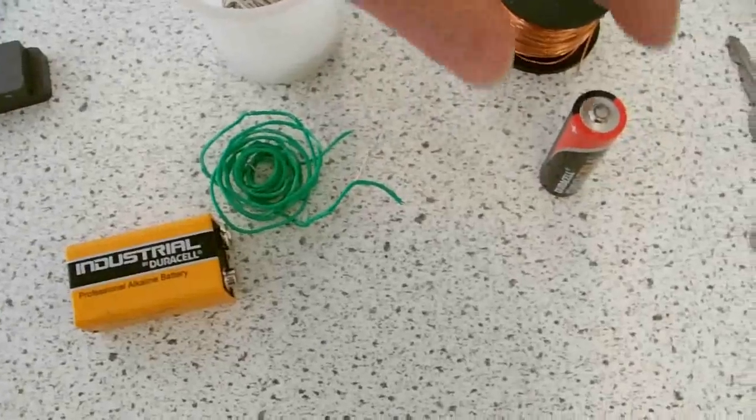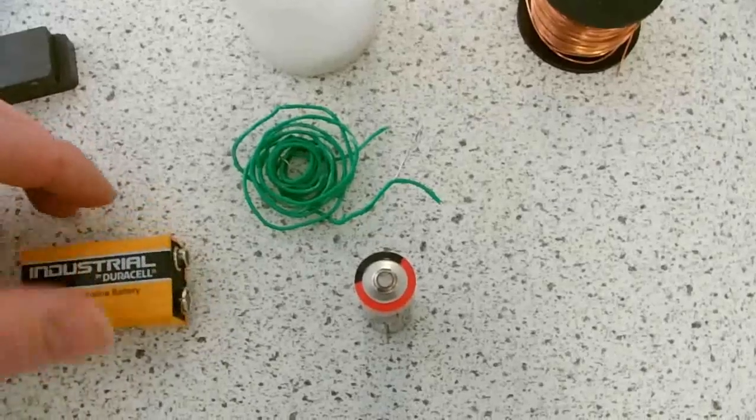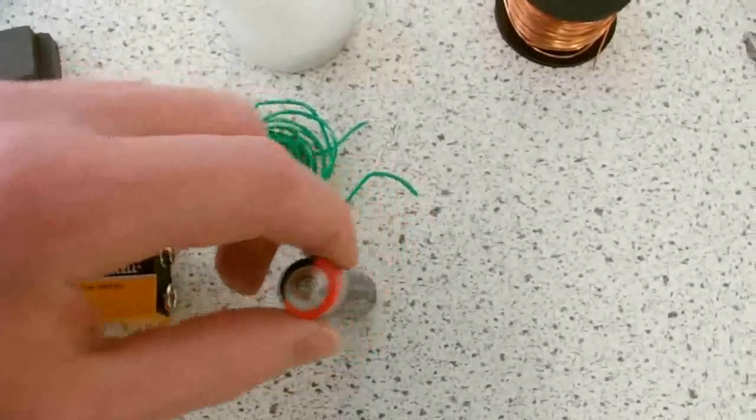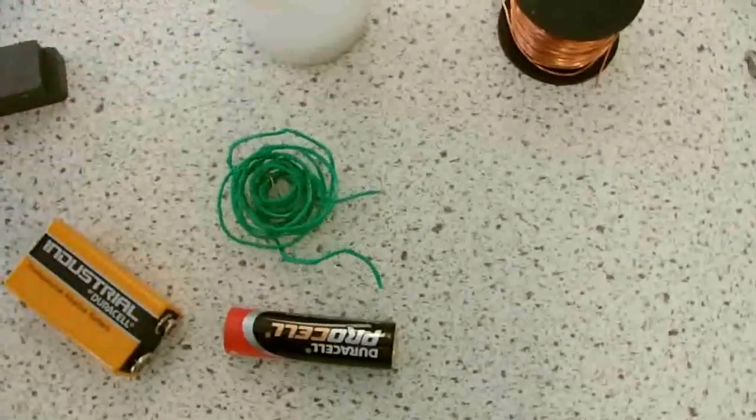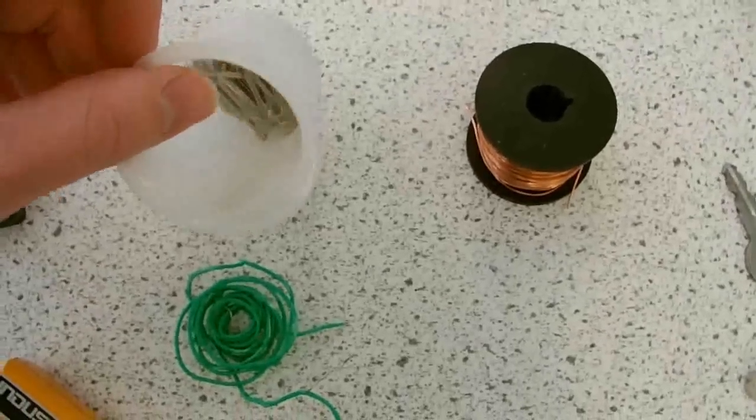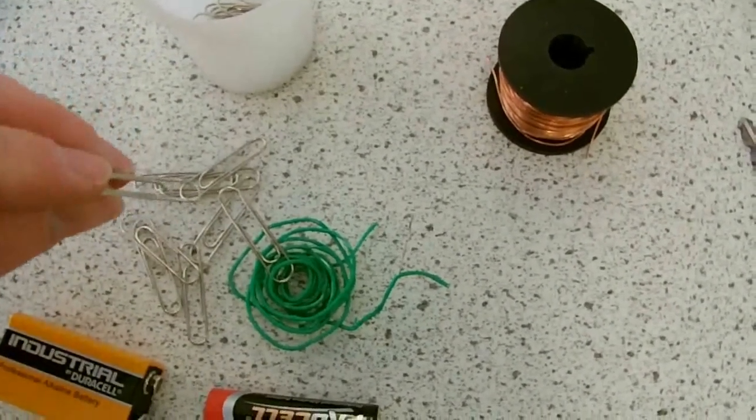You just need a cell of some type to give you a current. So these two ordinary household batteries, 9 volt battery or 1.5 volt cell. This is just ordinary insulated wire. It's very easy to come by. These paper clips are useful for standing things up and for making electrical connections.